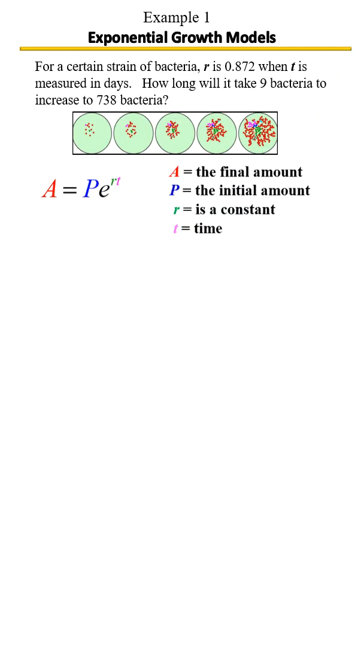For a certain strain of bacteria, r is 0.872 when t is measured in days. How long will it take for 9 bacteria to increase to 738 bacteria? We're going to use A = Pe^(rt), where A is the final amount, so 738. P is what it is right now, which is 9. R is your rate, 0.872. T we don't know—that's what they're asking us.